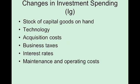To remember the factors, use the mnemonic 'STAB HIM' for investment spending and 'DO IT' for consumption. The 'I' in both of those mnemonics stands for interest rates, because interest rates affect both consumption and investment spending.